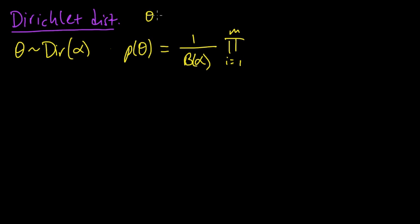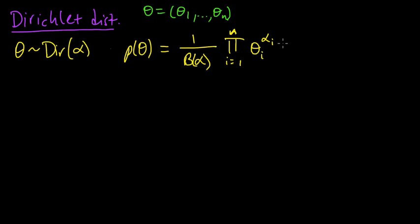So theta is going to be an n-dimensional vector — this is a distribution over n-dimensional vectors. The density is 1 over this generalized beta times the product of theta_i to the alpha_i minus 1, times the indicator function that theta is in the probability simplex S.